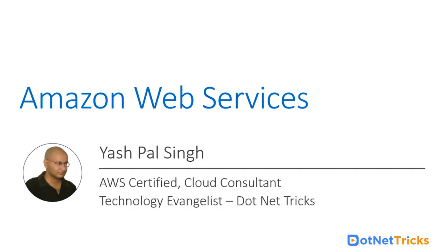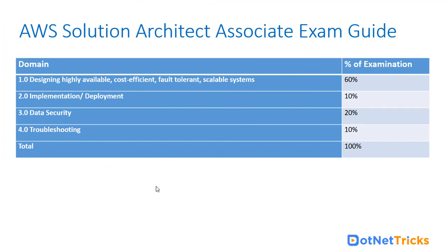In this particular video, we are going to explain the latest exam guide which you should follow for your preparation for the certification exam, as well as the certification roadmap laid out by AWS. Till February 2018, this was the exam guide followed in various AWS solution architect associate certification exams, where particular importance was given to four major domains. Domain one checks your knowledge about designing highly available, cost efficient, fault tolerant and scalable systems.